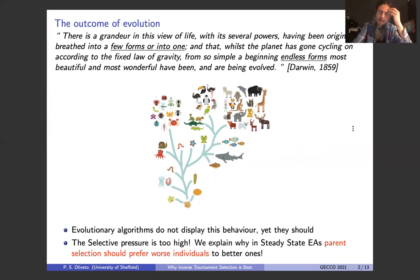And if there is one message I want you to take away from this talk, what we argue in this paper is that the reason is that in traditional evolutionary algorithms, the selective pressure that was used was too high. And in particular, in the paper, we argue why in steady state EAs parent selection should prefer worse individuals compared rather than better ones.